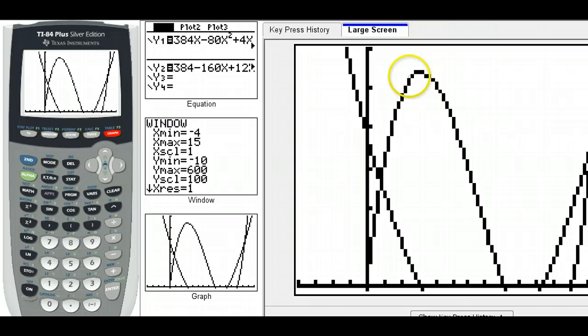Notice that my derivative is zero when the function has a slope of zero. Makes sense. My derivative changes from positive to negative at the maximum because my slope is positive on this side, negative on this side, zero in between.